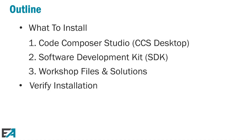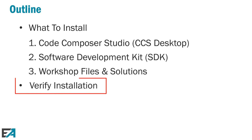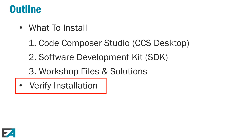This chapter is going to consist of five parts. The first part is what to install — what are the different things we need to install. Then those three main things: Code Composer Studio, the software development kit (otherwise known as the SDK), and the workshop files and solutions provided from Embedded Advantage. And finally, the last part is going to be verifying our installation — a very important step. We want to make sure we got it all there and done correctly, to avoid problems in the future.